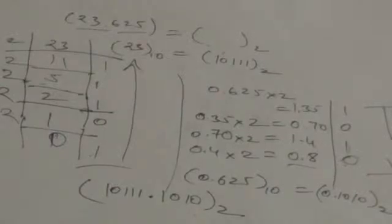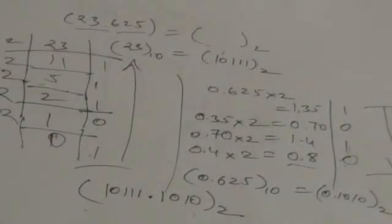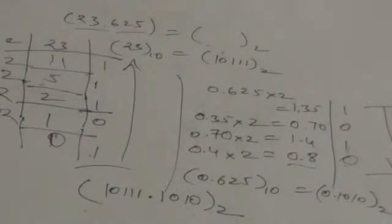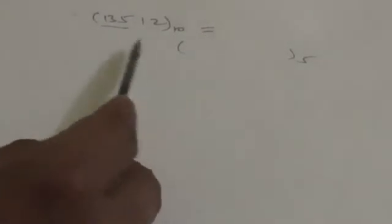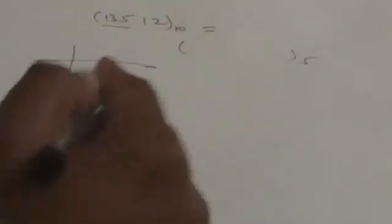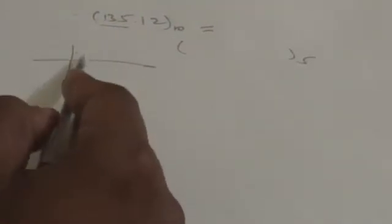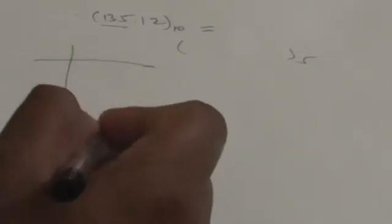Now suppose I have to convert a decimal number into a number whose base is 5. Let that number be 135.12. It is a decimal number and I have to convert it into a number of base 5. Again I separate the integer part from the fractional part. The integer part is 135, so I have to convert it into a base-5 number. I will divide it by 5 and successively divide each quotient by 5, then accumulate the remainders.